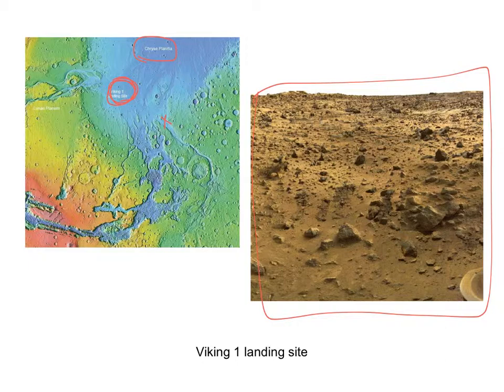They eventually chose Chryse Planitia and came down instead on July 20th, which was also an anniversary — the first moon landing, Apollo 11, July 20th, 1969, barely within the decade Kennedy promised. So rather than July 4th, Viking 1 came down on July 20th. As you might expect, you see a jumble of rocks washed out into the plain. The Viking landers did not do much elemental analysis of rocks, but we can assume many of these are igneous volcanic rocks jumbled up in that area, along with a lot of sand and fine material.